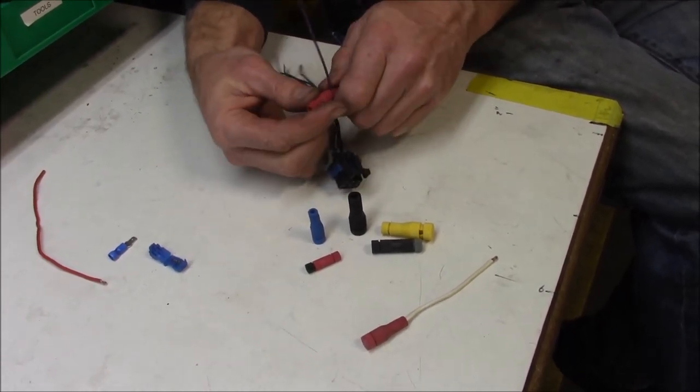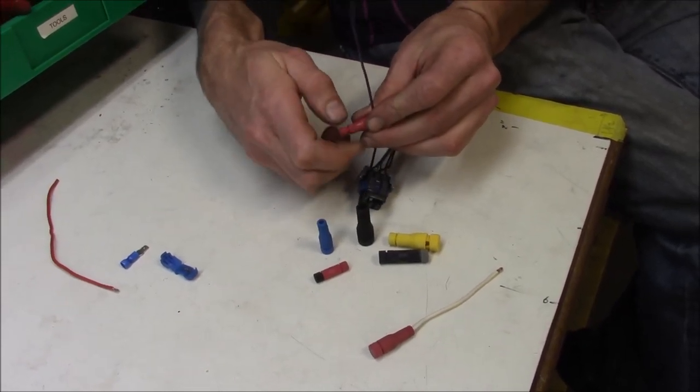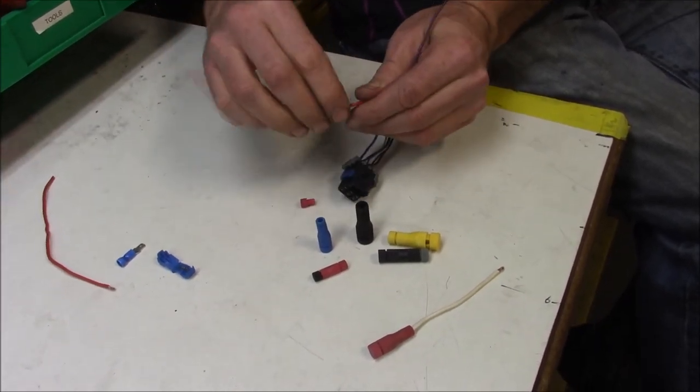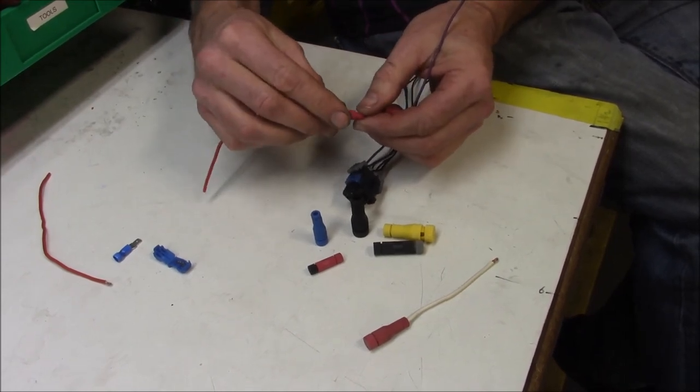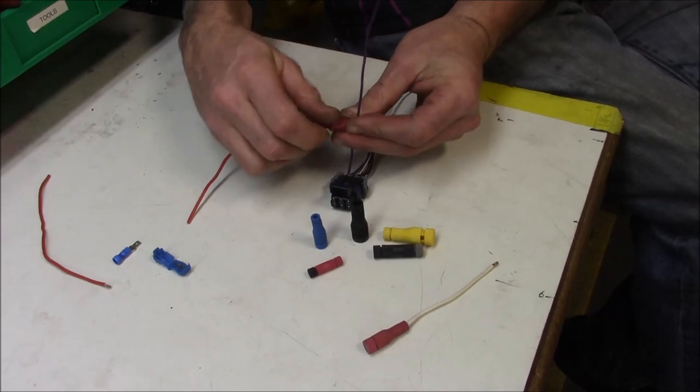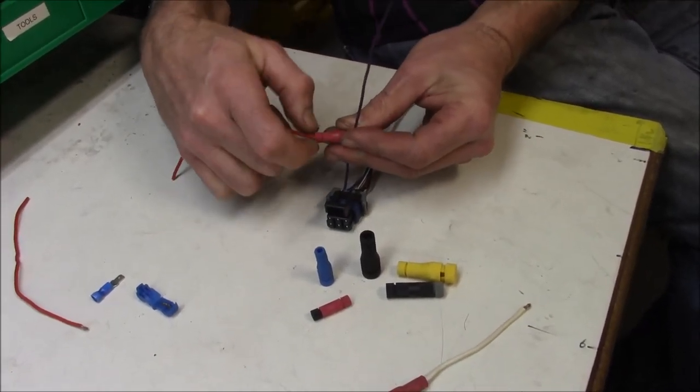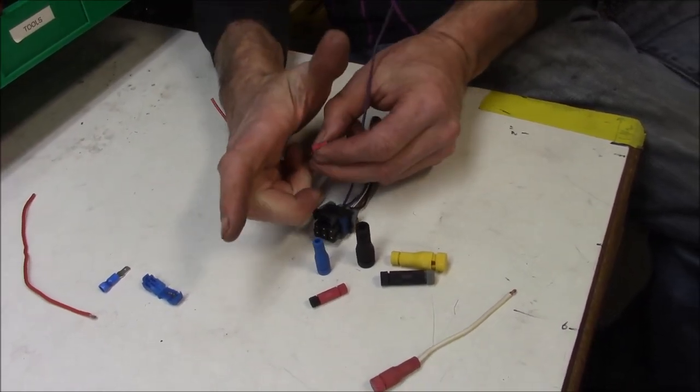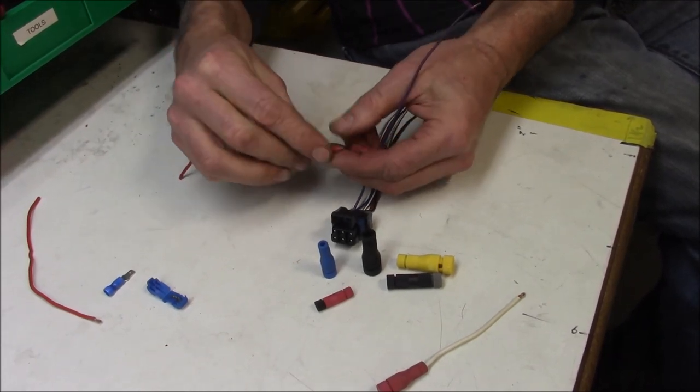So then on this end you just unscrew this and you take your wire for what you want to run - like say this is running out to your tail lights - put it in like that, like all how these work, and you screw that in there. Yeah it came out, it's not really the right size wire but I'm trying to show you.